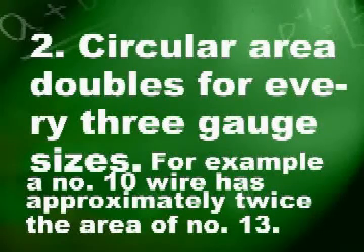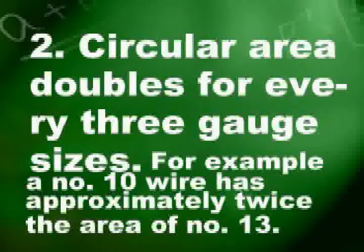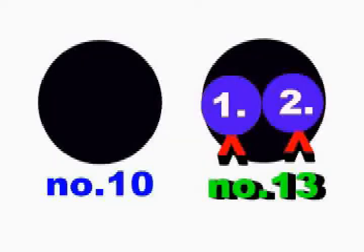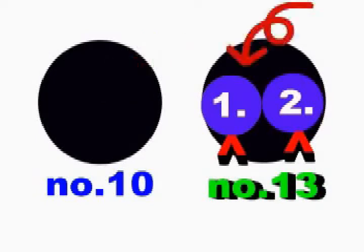Number 2: Circular area doubles for every 3 gauge sizes. For example, a number 10 wire has approximately twice the area of number 13 wire. The picture shows that number 10 wire has twice the area of number 13 wire.